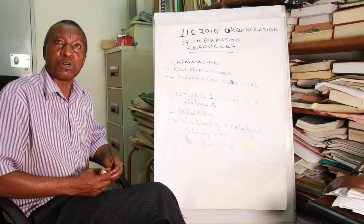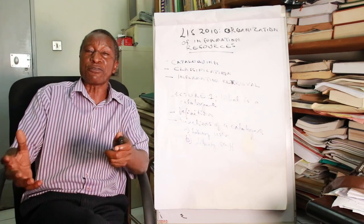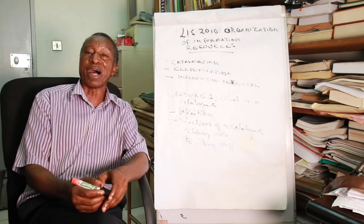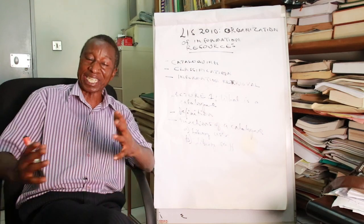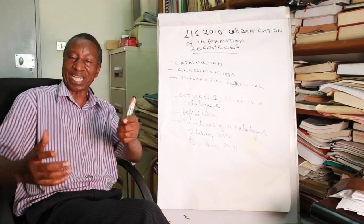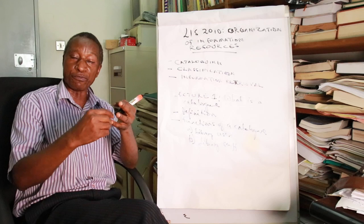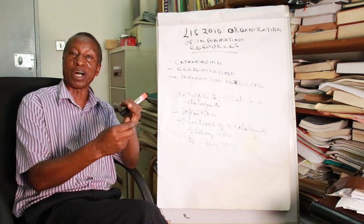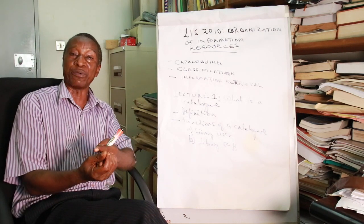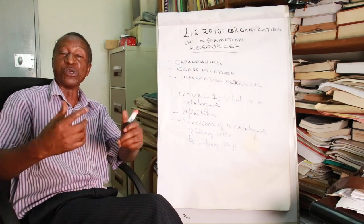Before I talk about the purpose of a catalog, we can also have an inventory or listing of collections owned by two or more libraries. That type of catalog is called a union catalog, because it lists collections of more than one library. For example, collections of the University of Zambia Library, the Copperbelt University Library, and Mulungoshi University Library — if they are all put together in one listing, then it becomes a union catalog.